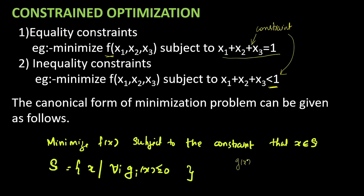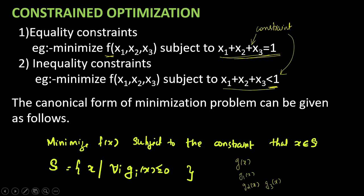If we have two constraints, we will have g1(x) and g2(x). If we have three constraints, we add one more constraint g3(x), and so on. Similarly, we can have multiple constraints. This constrained problem can be converted into an unconstrained one.